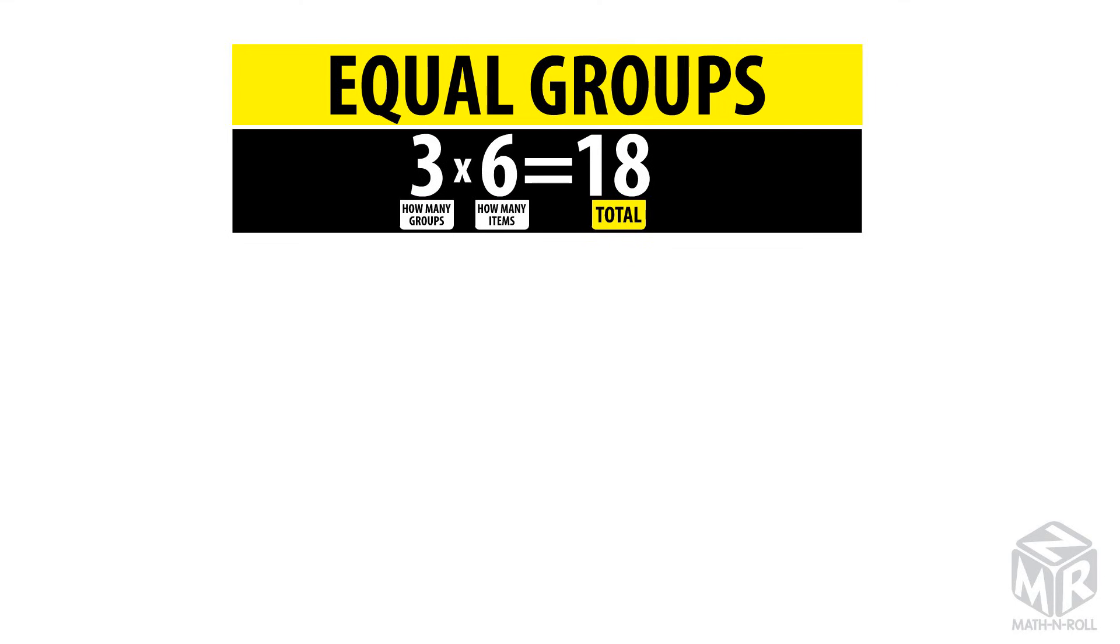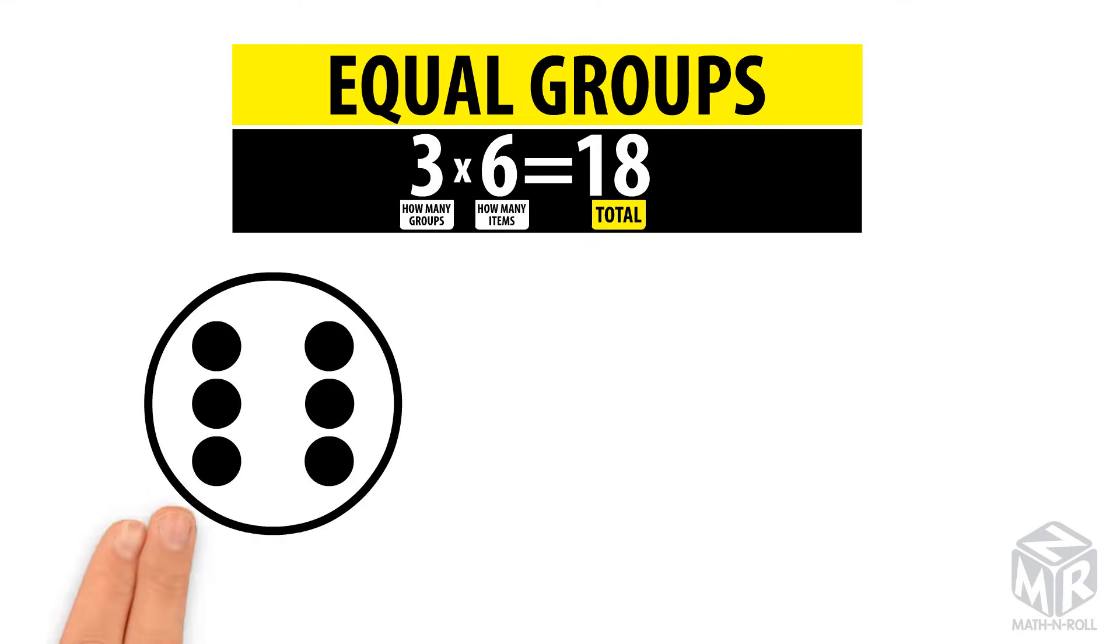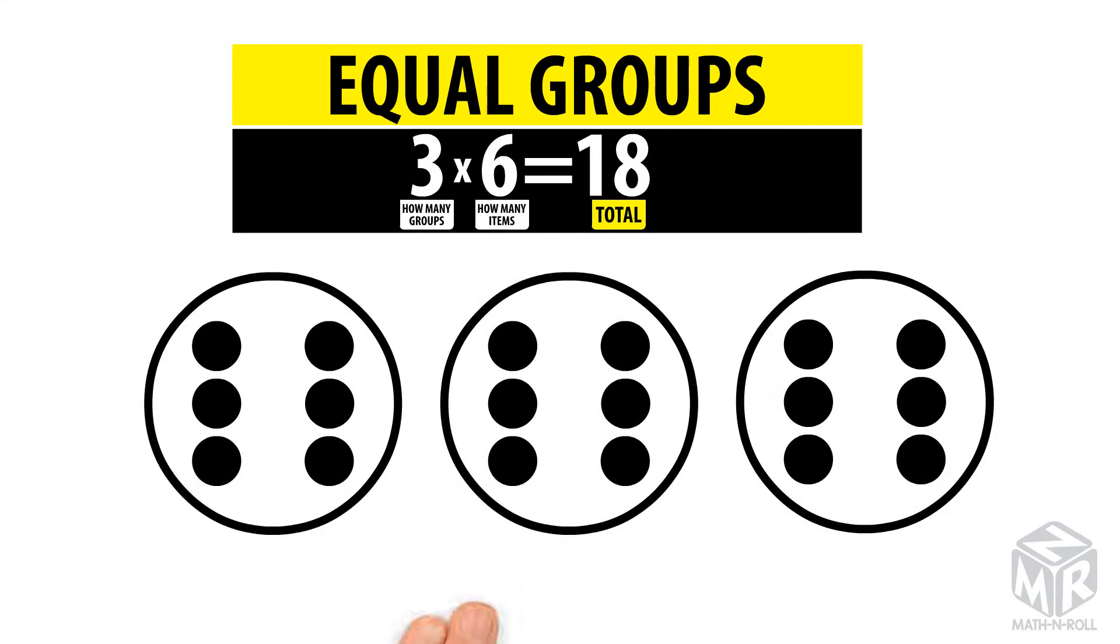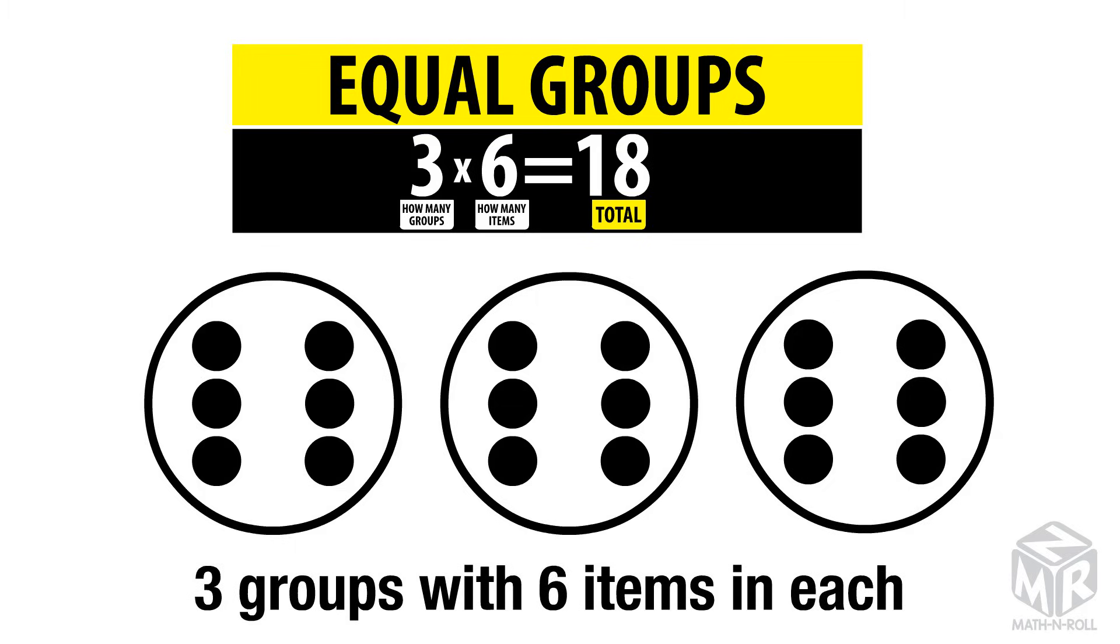The first strategy is using equal groups. The first factor tells us how many groups we have. The second factor tells us how many items are in each group. We have three groups with six items in each.